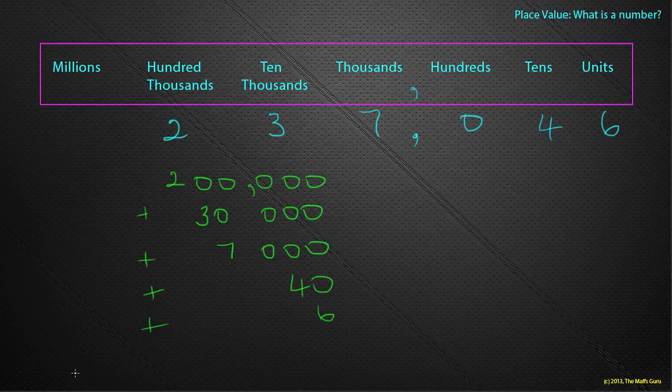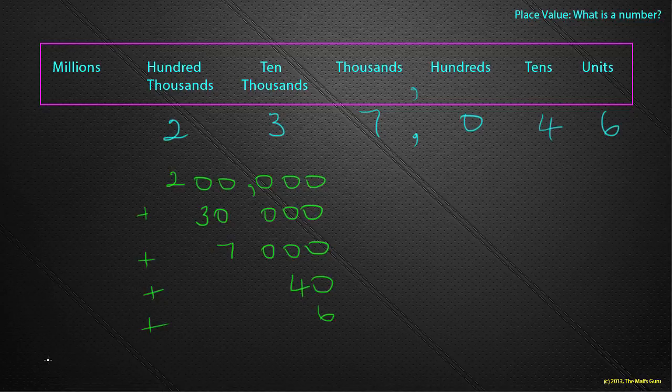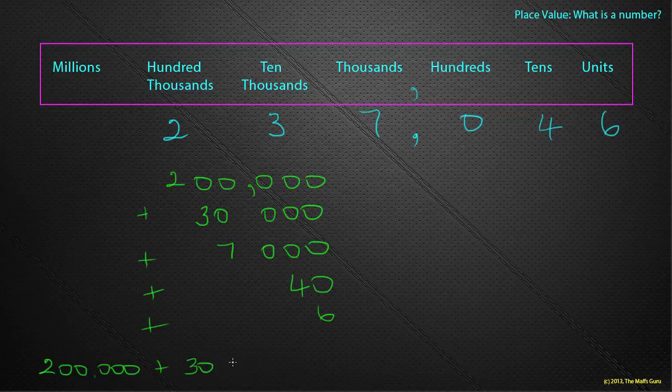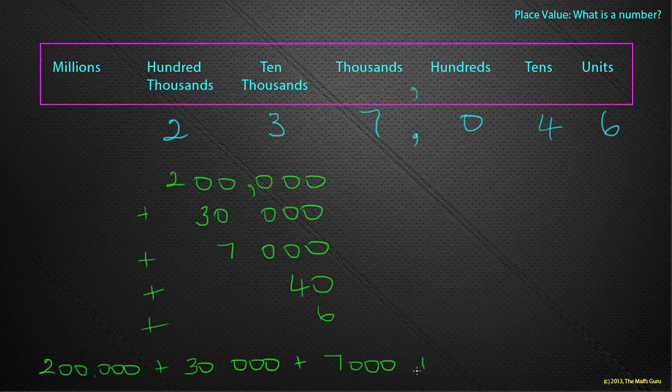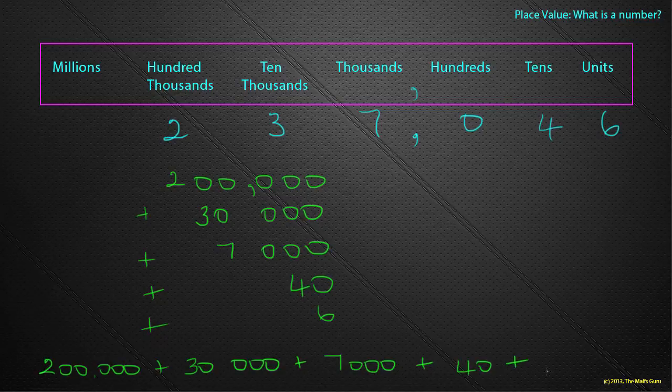And now I would probably write that out in long ways, just so that it makes it easier for someone to read. So, two hundred thousand, plus thirty thousand, plus seven thousand, plus forty, plus six.